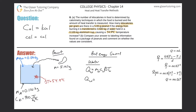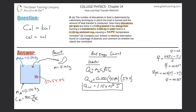Plugging in for water: mass is 0.500 kilograms, specific heat of water is 4,184 J/(kg·°C) — you'll want to memorize this — and the temperature change is +54.9°C (positive because the temperature increased). So Q_water = 0.500 × 4,184 × 54.9, which works out to approximately 1.15 × 10^5 joules.